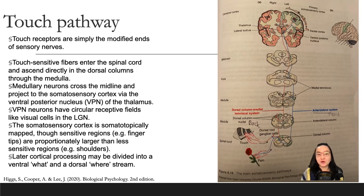Cortical processing of touch may be divided into a ventral 'what' stream and a dorsal 'where' stream. On the picture you can see the touch pathway starting from the bottom and going upward.